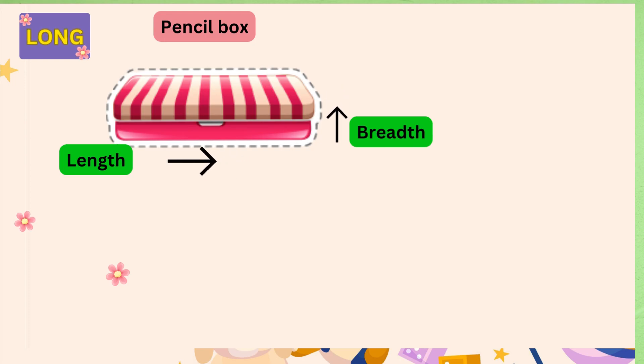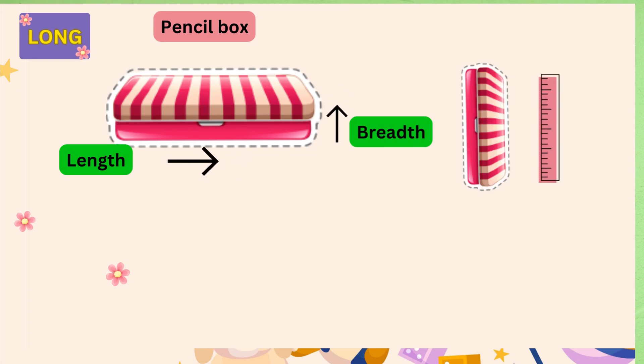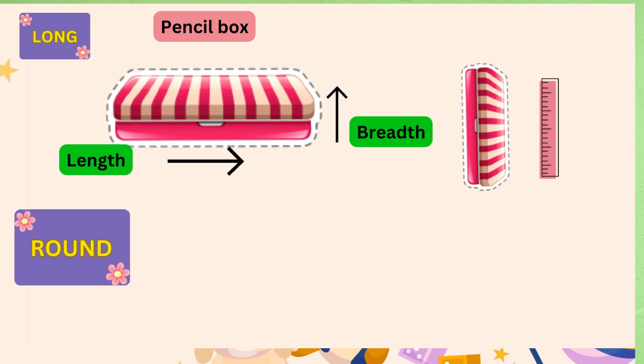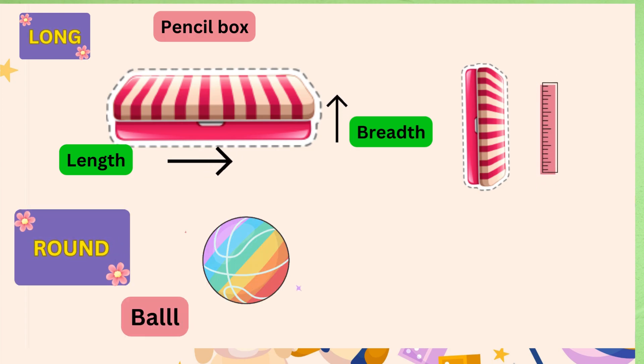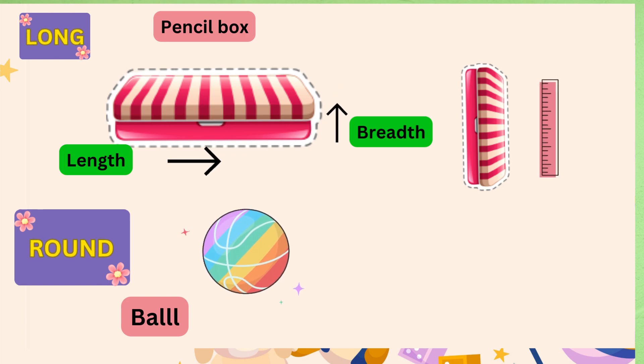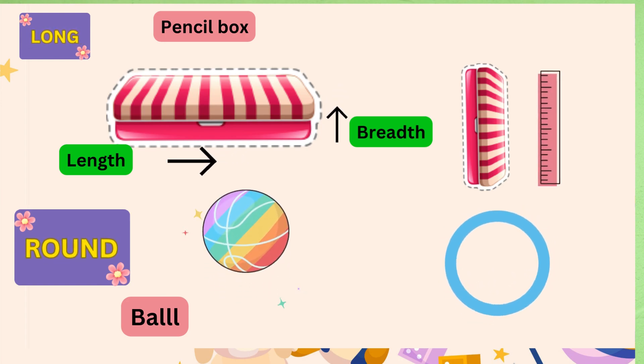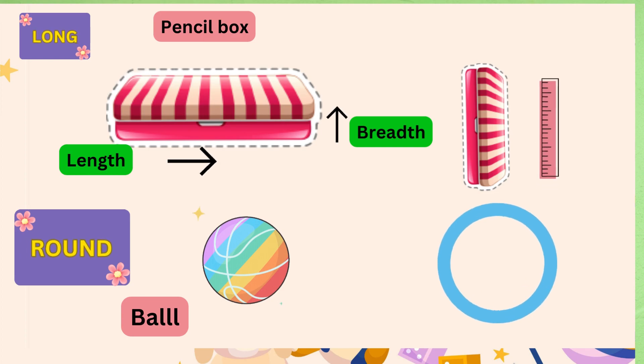Let's see the example of round. As you can see, the ball's shape is like this circle. It's like a complete circle, so we call this shape round.